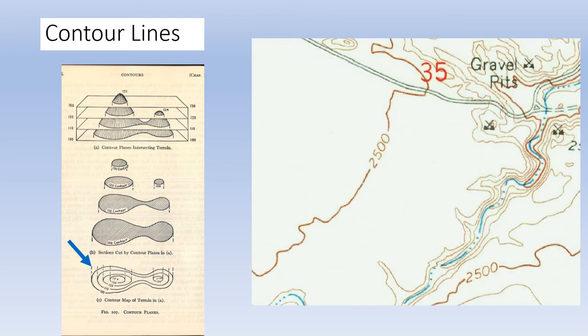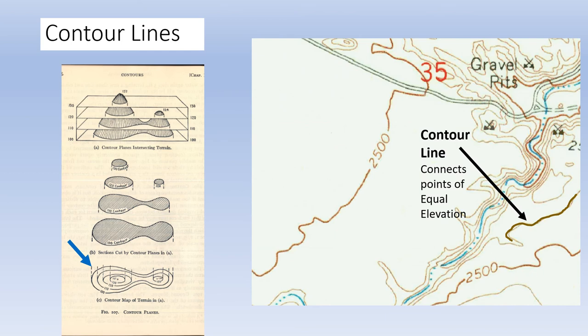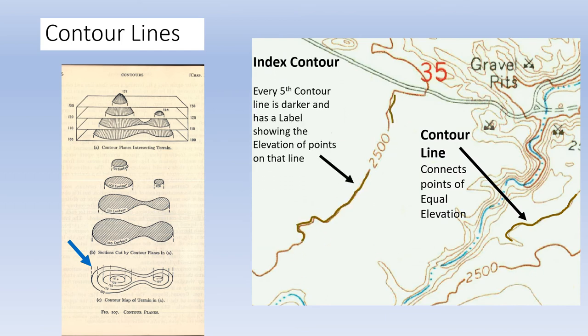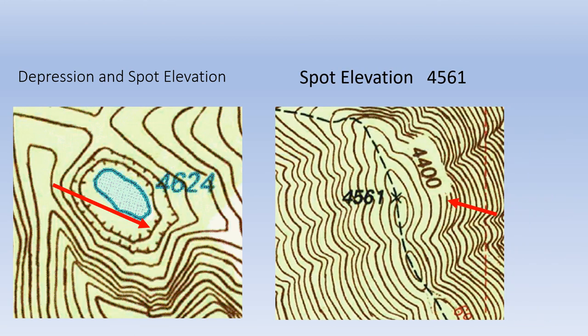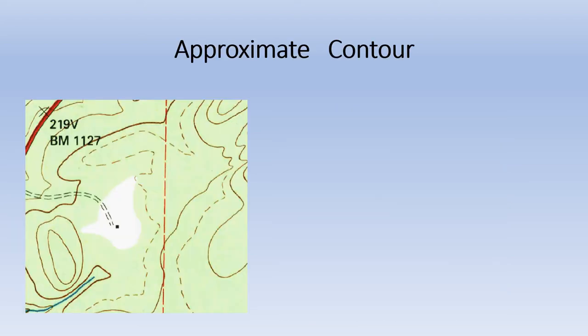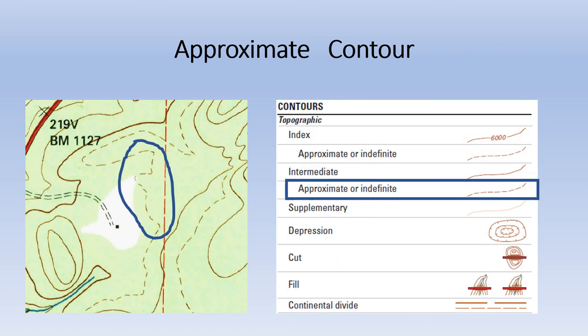Contour lines connect points of equal elevation. Every fifth contour line is thicker and labeled with its elevation. For depressions, tick marks on the contour line are on the downhill side. Note that it is a depression because the contours form a complete closed loop. This spot elevation has been measured and has a recoverable mark. The mapmaker will sometimes add approximate or indefinite contours when it is felt that extra terrain information would be helpful.